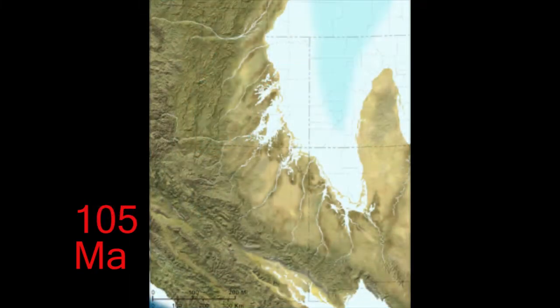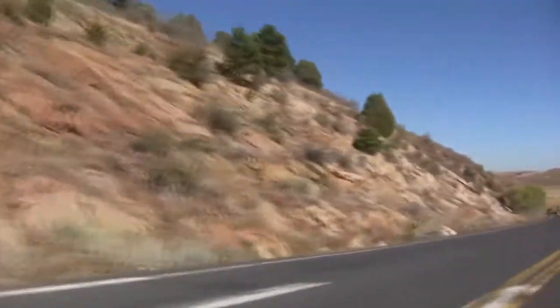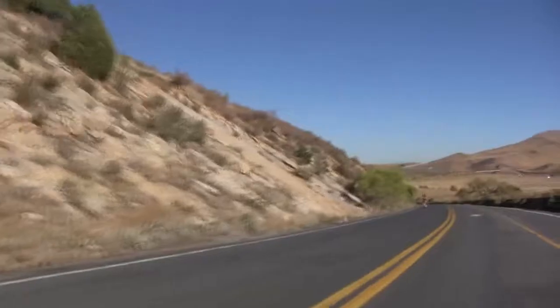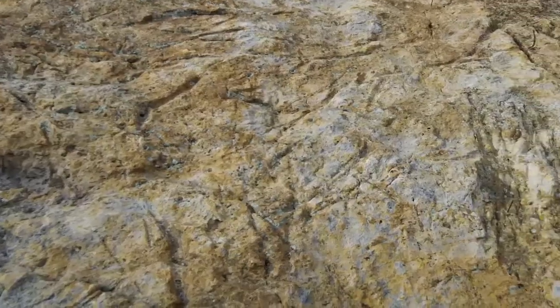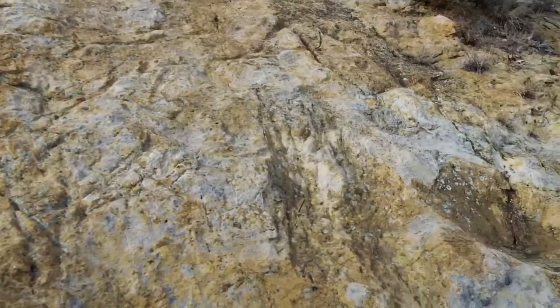The Dakota Formation is deposited on the western shore of this encroaching intercontinental seaway. As we approach the bottom, we see oyster shells, fish scales, and the scrape marks from crocodile claws.